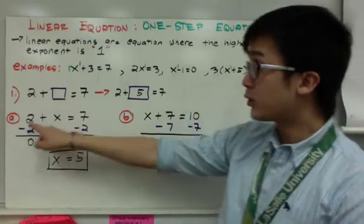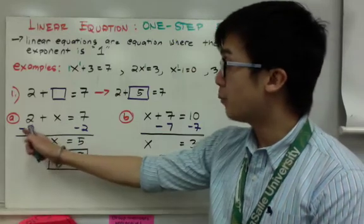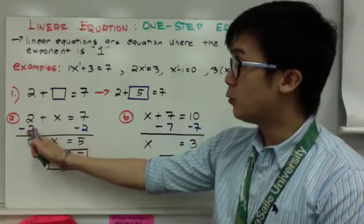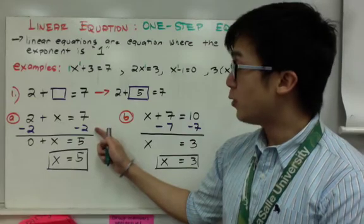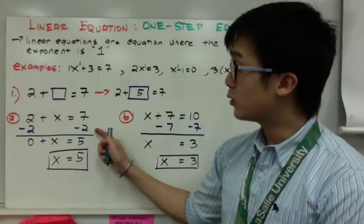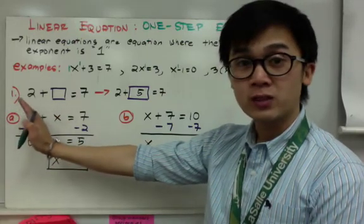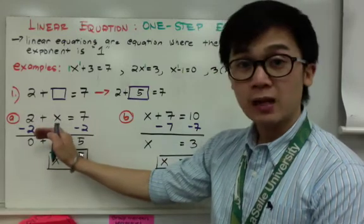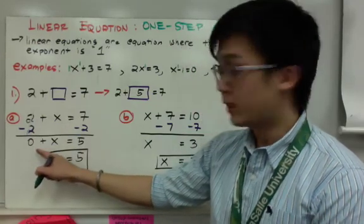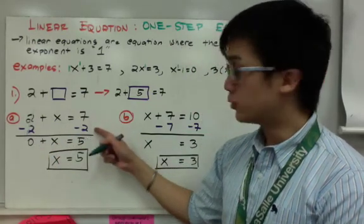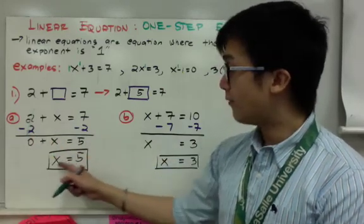To get x by itself, we need to get rid of 2. To get rid of 2, you do the opposite operation — the additive inverse of 2 — which is minus 2. Whatever you do on one side of the equation you must do on the other side as well. So 2 minus 2 cancels out, leaving x equal to 7 minus 2, which equals 5. In algebra we don't write 0 plus x, so x equals 5.